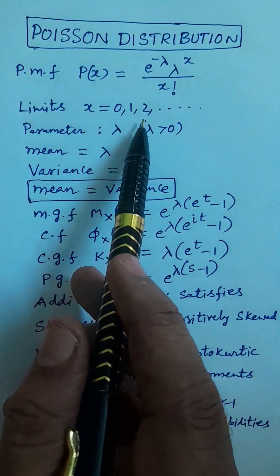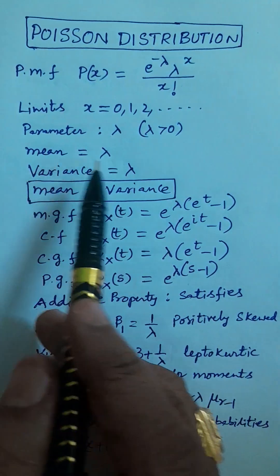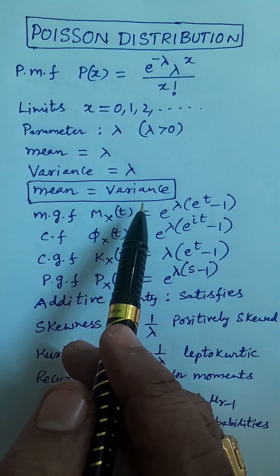Limits: X is equal to 0, 1, 2, and so on up to infinity. Parameter lambda, where lambda is greater than 0. Mean equals lambda, variance equals lambda. That is, mean is equal to variance for the Poisson distribution.